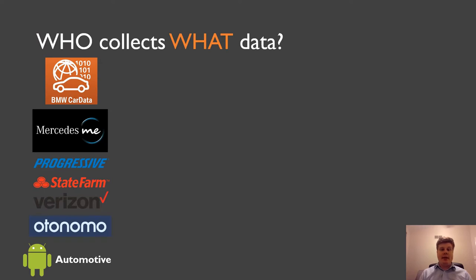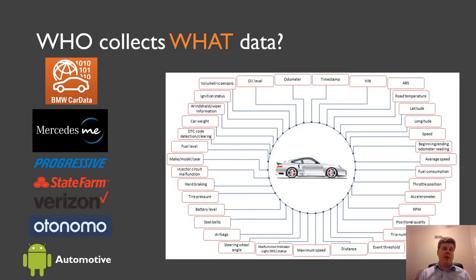And what data can be collected? There is a myriad of sensor data and other information that can be collected from vehicles. It can range from power train-related information, such as vehicle speed or torque or steering wheel angle, to body-related information like seatbelt status or airbag status, and many more.